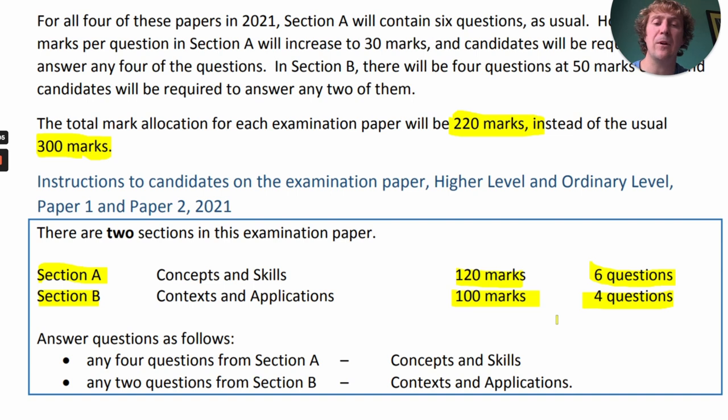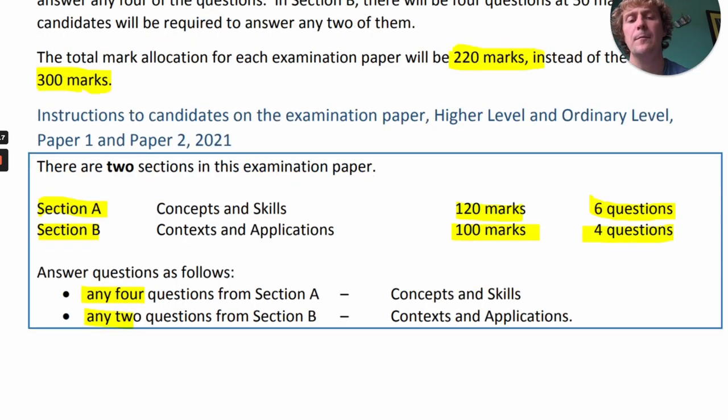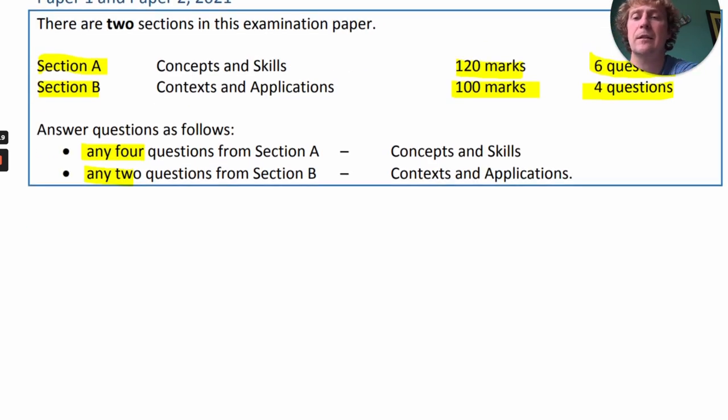Now, the minimum that you have to answer on the paper is 4 out of 6 in Section A and 2 out of 4 in Section B. What I'm going to recommend is for Section A, do 5 out of 6, so do one extra. For Section B, do 3 out of 4, also doing one extra.